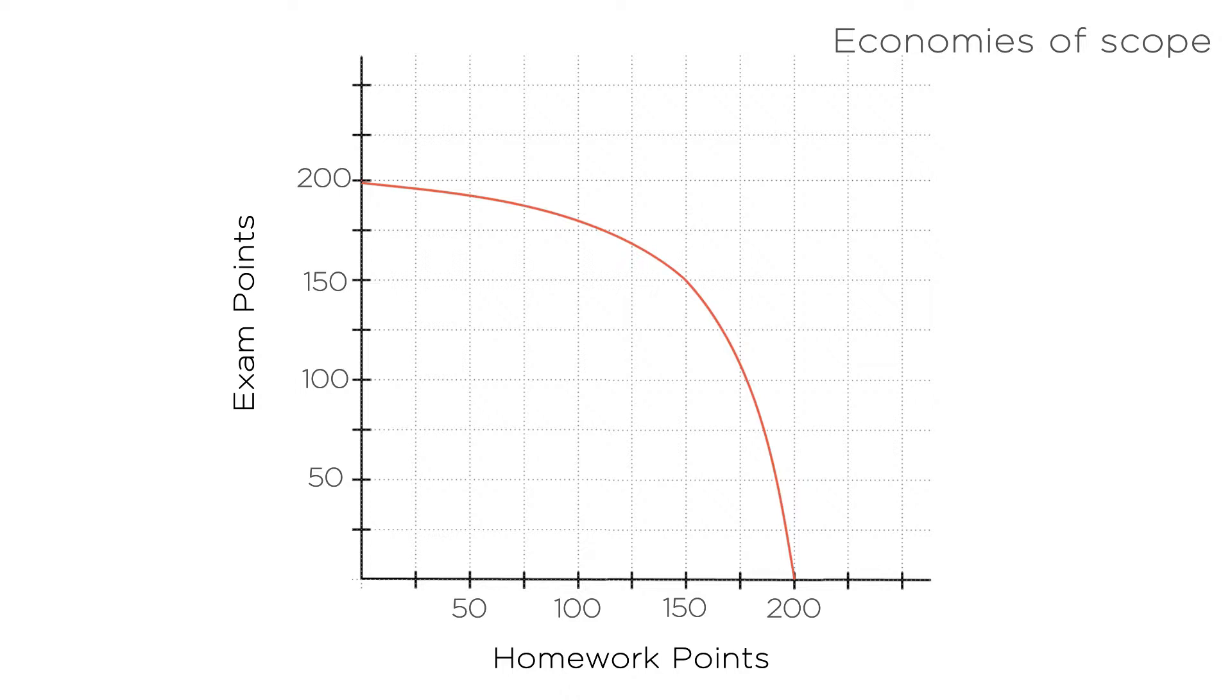This graph shows that by focusing on just homework or just exams, you still are only able to get a maximum of 200 points. But if you do some of both, because of economies of scope, you can increase your total points to, say, 300, with 150 each from homework and exams.